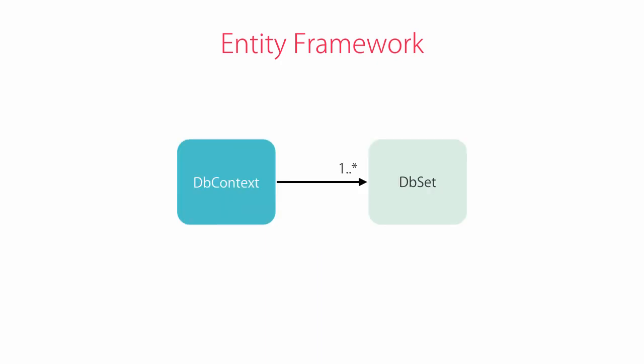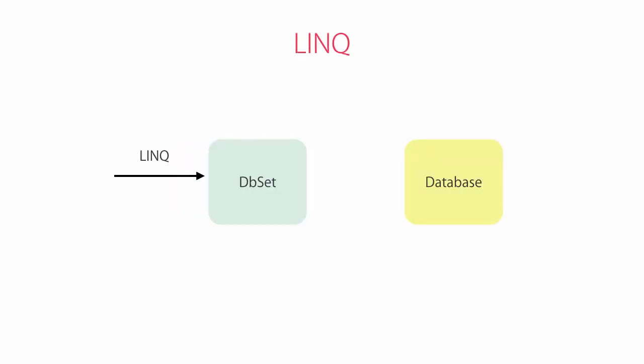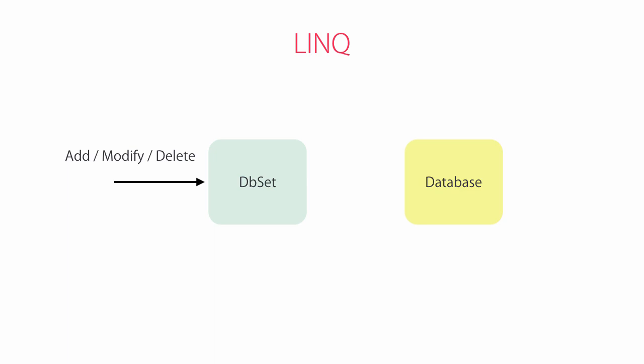Entity Framework provides a class called DBContext, which is a gateway to our database. A DBContext has one or more DBSets, which represent tables in our database. We use LINQ to query these DBSets, and Entity Framework will translate our LINQ queries to SQL queries at runtime. It opens a connection to the database, reads the data, maps it to objects, and adds them to DBSets in our DBContext. As we add, modify, or remove objects in these DBSets, Entity Framework keeps track of these changes, and when we ask it to persist the changes, it will automatically generate SQL statements and execute them on our database.